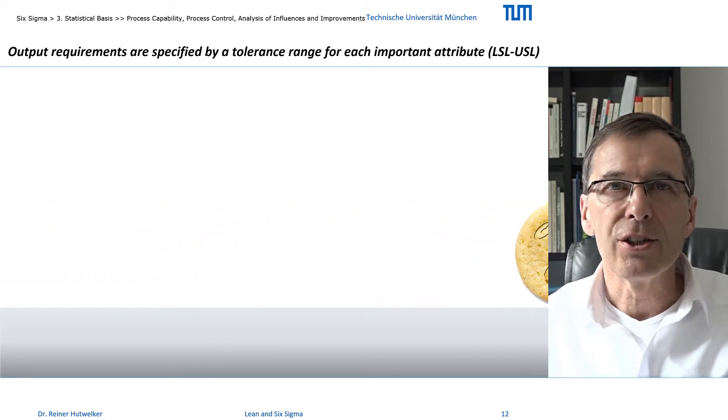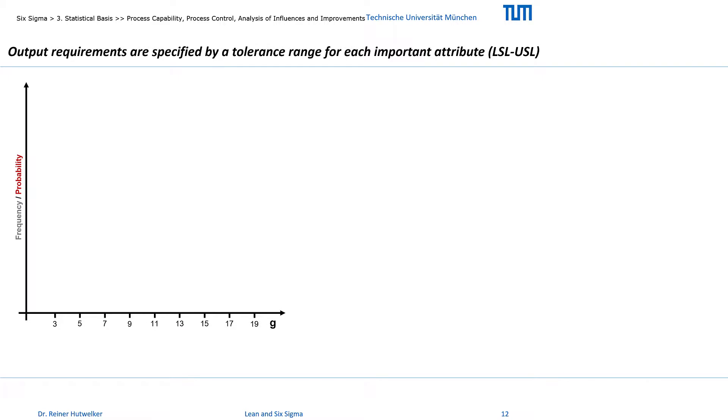What is behind this evaluation? Weight is an attribute of cookies and we promise that our cookies have an average weight of 10 grams. Of course we can't always bake exactly the same cookies. Therefore we additionally promise to keep the limits between 7 and 13 grams.